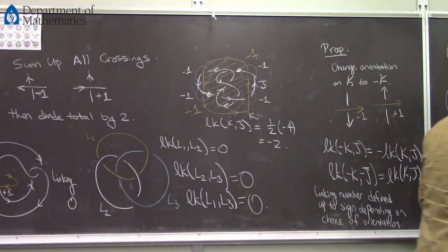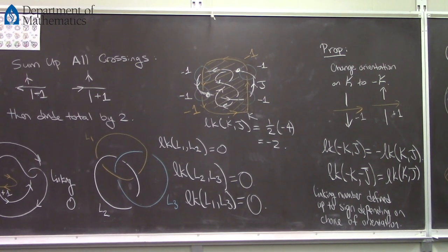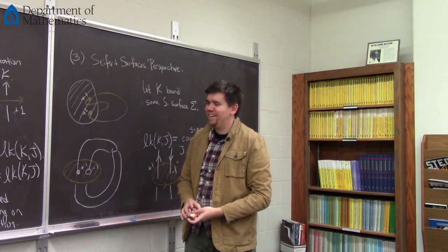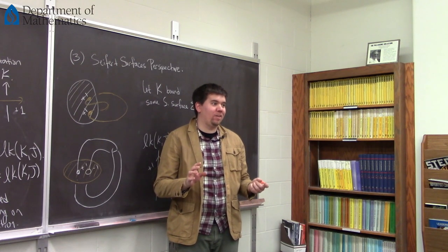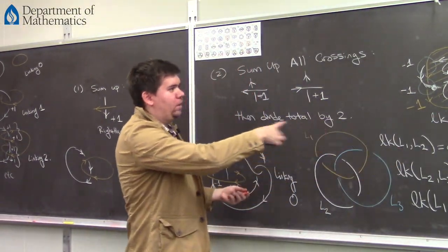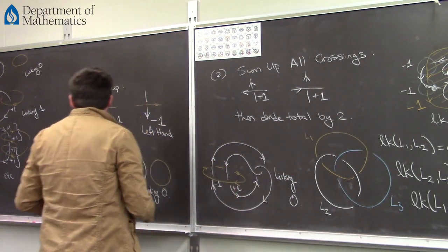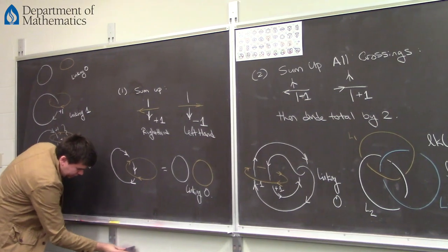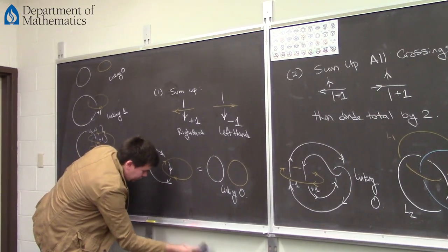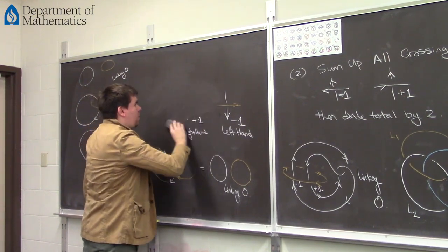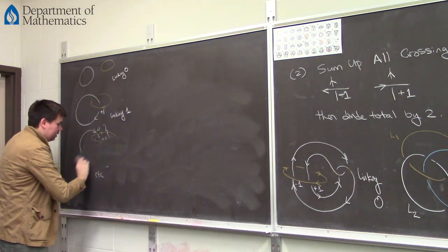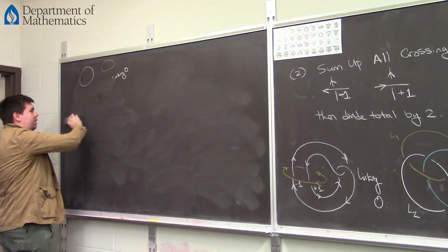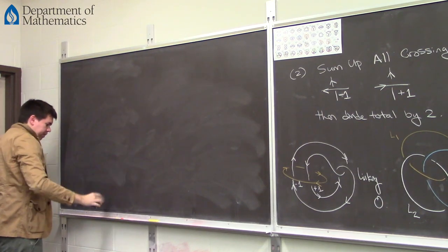So this Seifert surface view is a third way we might think about linking. There are two more ways I want to show you, and this is where things start to get wild. So far these are all equivalent definitions. Here's a fourth one — let's use some of the machinery we built up the last few lectures. Let's give a fundamental group perspective.